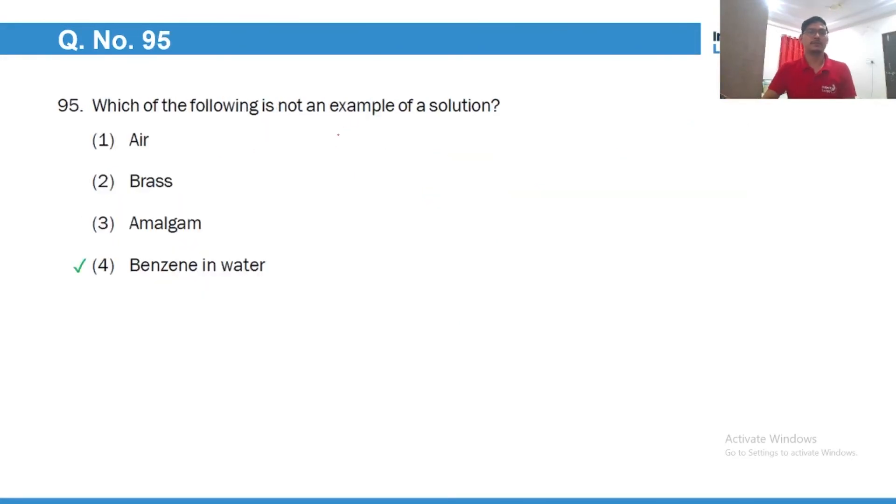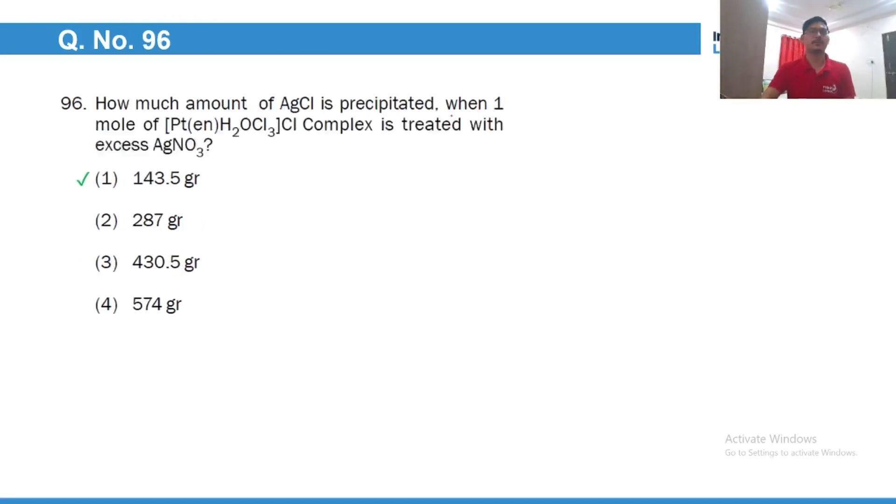Which of the following is not an example of solution? Benzene is not miscible with water, of course, so they will not form a homogeneous mixture which is by definition a solution. This bond will ionize to give only one mole of chloride per complex per mole of complex. So we will get one mole of AgCl, of course, and the molar mass of AgCl is 143.5.